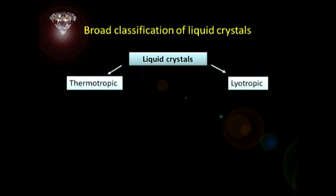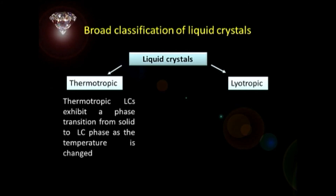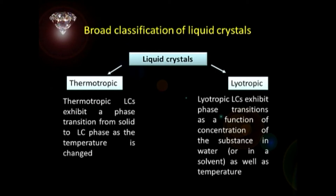The compounds that were synthesized were not room temperature liquid crystals. Now let us look at the broad classification of liquid crystalline materials. They can be classified into two types broadly: thermotropic liquid crystals and lyotropic liquid crystals. Thermotropic liquid crystals are like the cholesterol benzoate example — they respond to changes in temperature and show the transition from solid to liquid crystalline phase as a function of temperature.